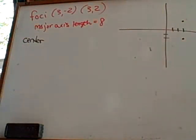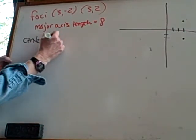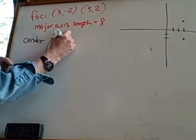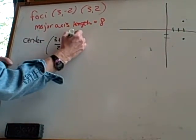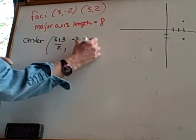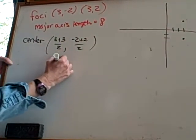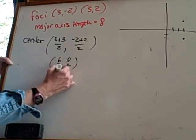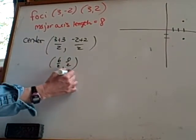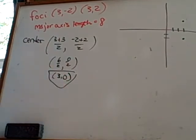So what are we going to use? We're going to use midpoint here. We're going to use our midpoint formula in order to find our center. So what we'll do is three plus three over two and then negative two plus two over two. So we get six over two and zero over two. So we get three comma zero. That's going to be the center.